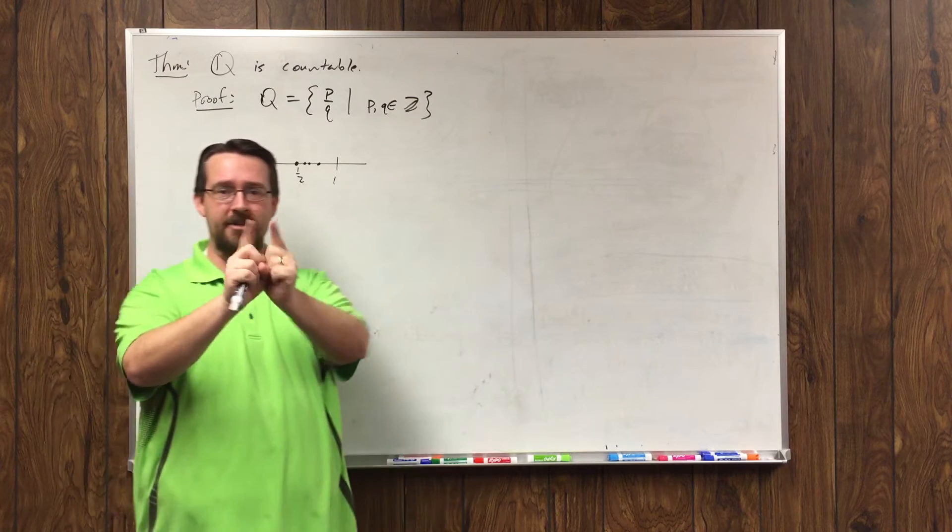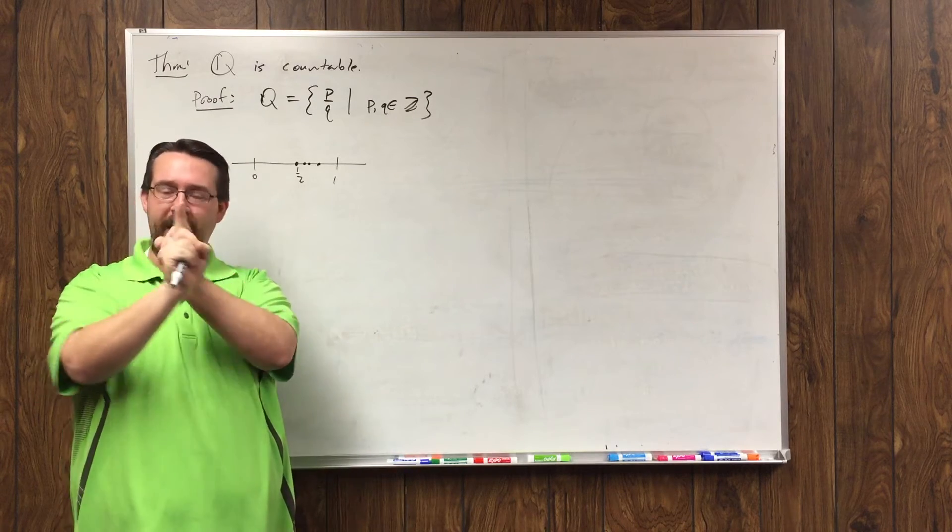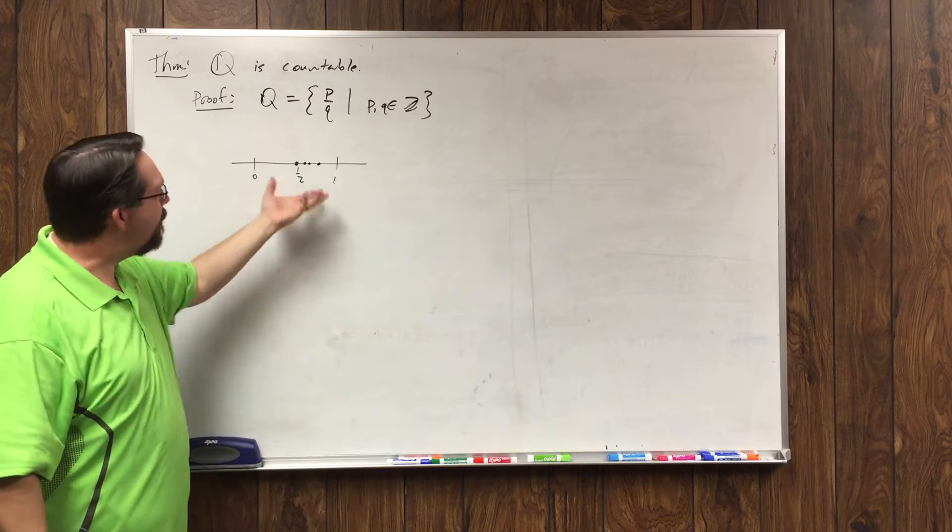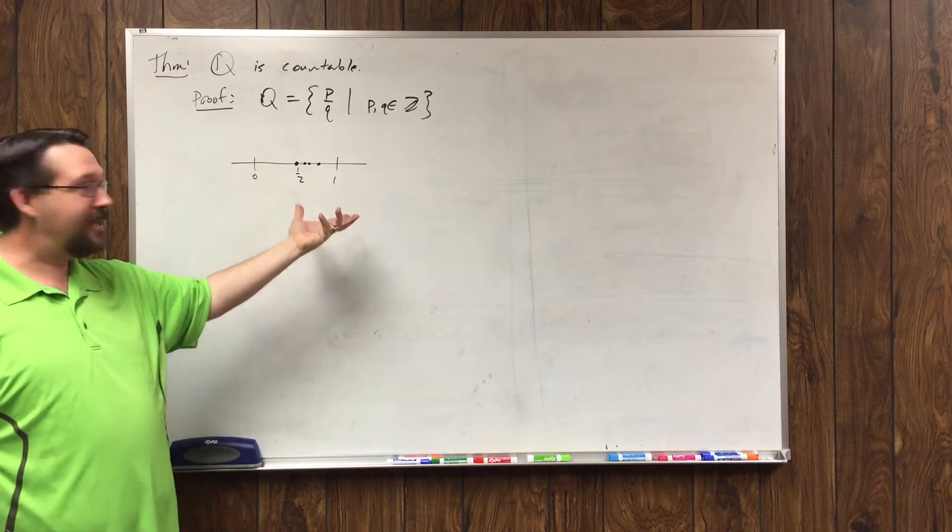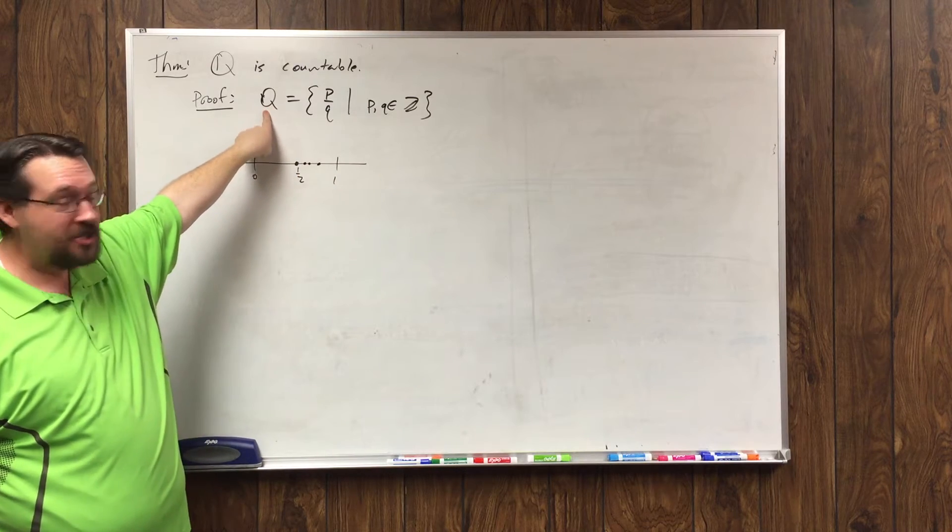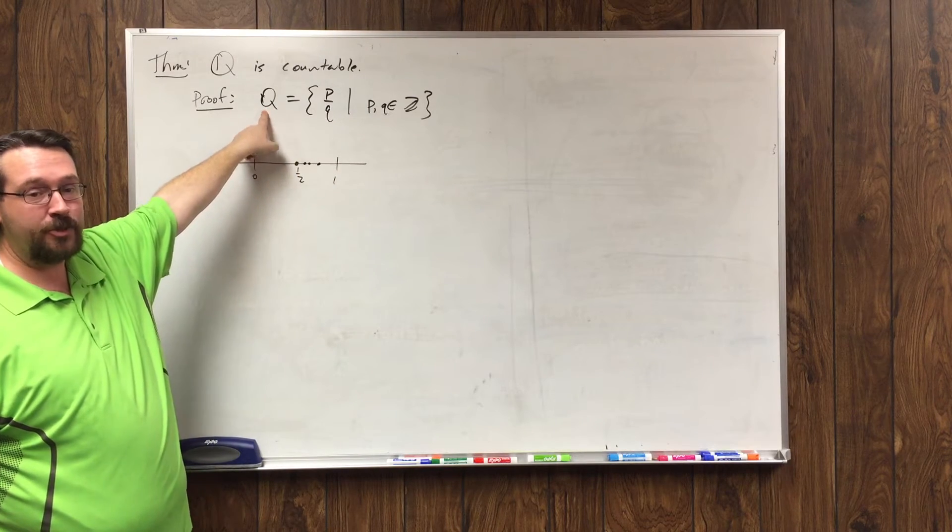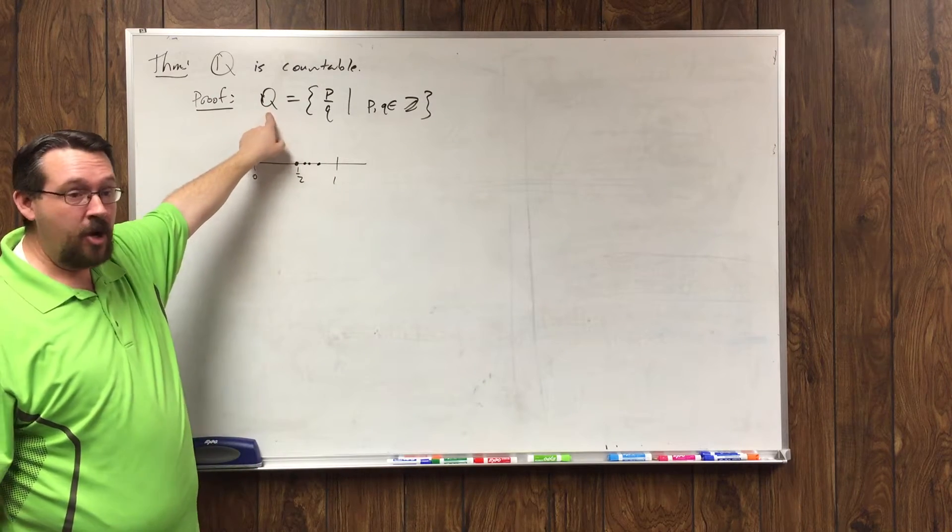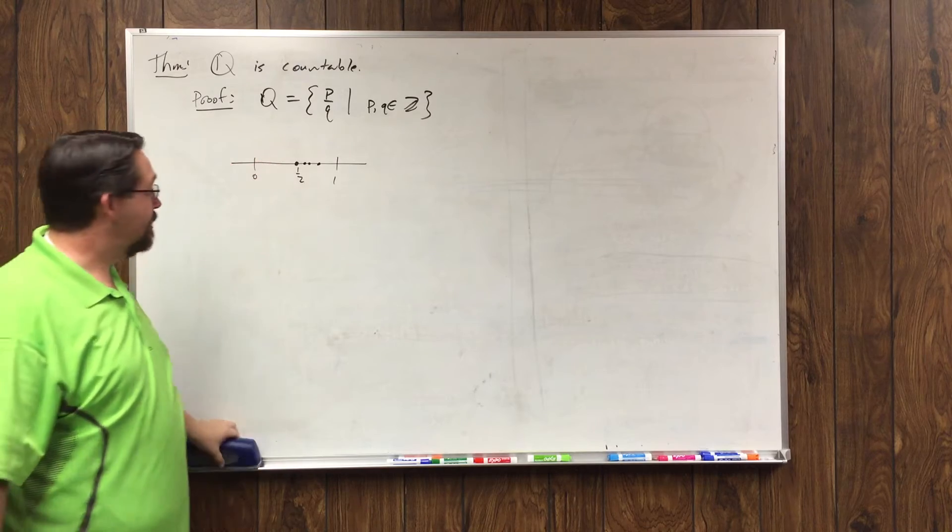But this is what's called a dense set. Between any two points, as long as you have an ordering on there, between any two points, there's another one. So no matter how close you get, there's another point inside there. So the point that I'm making here is that this is an incredibly large set, certainly not a property that's true for natural numbers. It's not dense when you talk about natural numbers. But rational numbers are dense.